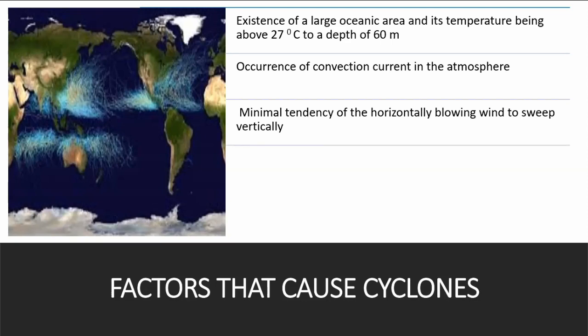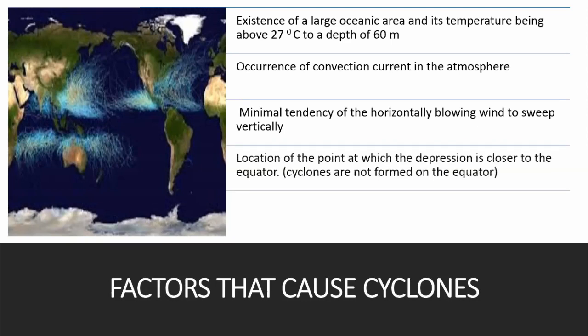Minimal tendency of the horizontally blowing wind to sweep vertically. Naturally, wind will blow horizontally and there is minimal tendency for it to sweep vertically. Additionally, the location of the point at which the depression is closer to the equator is another factor, as cyclones are not formed at the equator itself.